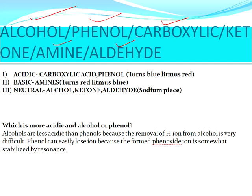First of all we will do the primary test, also called the starting test. It is not a confirmation test, it is only the starting test. In terms of acidic nature, carboxylic acid and phenol both have acidic nature because they turn blue litmus red. Amines are basic and turn red litmus blue. Alcohol, ketone, and aldehyde are neutral compounds.